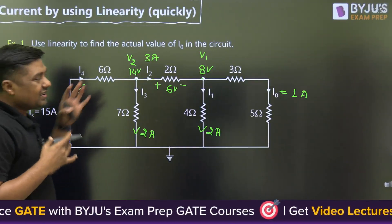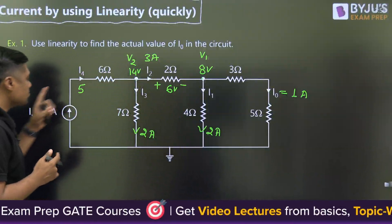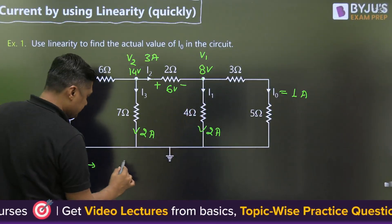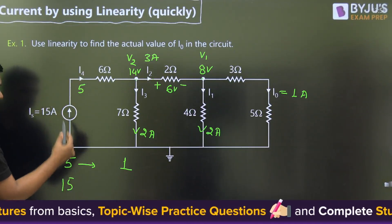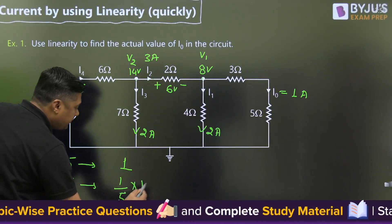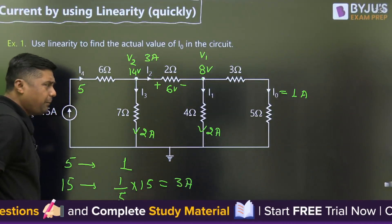Now, the method of linearity: if this is 5 amperes and the current at the output is 1, then if this current is 15 - we are increasing it by three times scaling - what is the value of the current? 1/5 times 15, and that is why I₀ is 3 amperes. Simple.